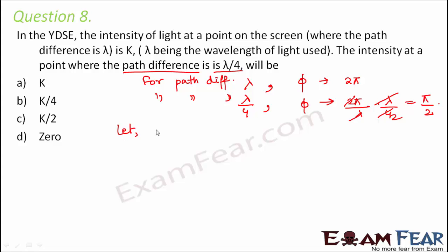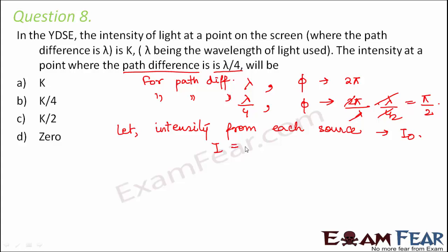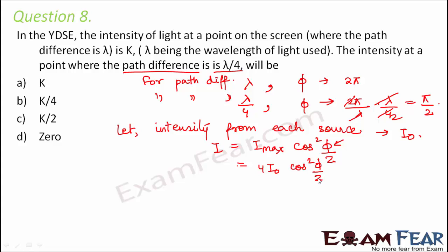In Young's Double Slit Experiment with 2 sources of light, we assume the intensity of each source is I₀. The final intensity expression is I = I_max × cos²(φ/2), where φ is the phase difference and I_max is the maximum intensity. We can write I_max = 4I₀, so I = 4I₀ cos²(φ/2). These expressions we have already derived in the recap section.